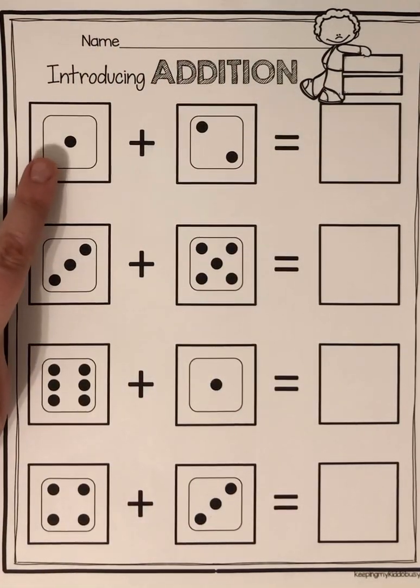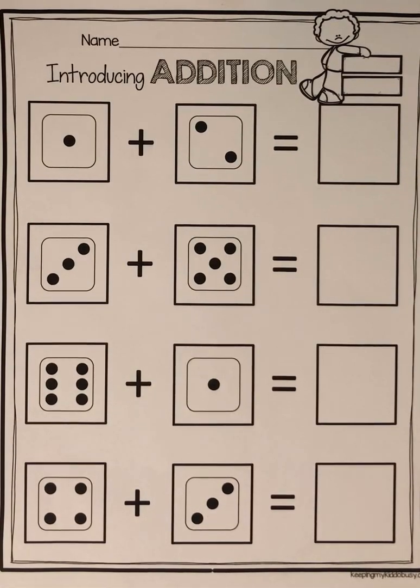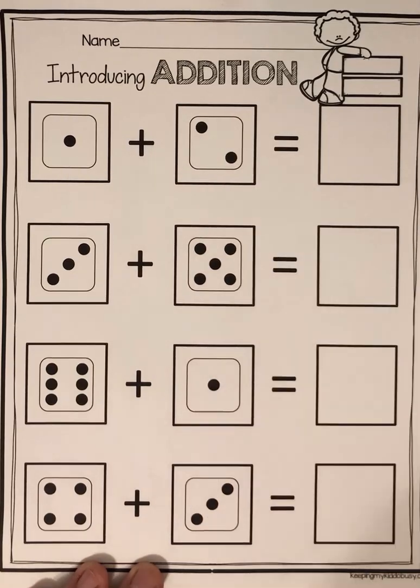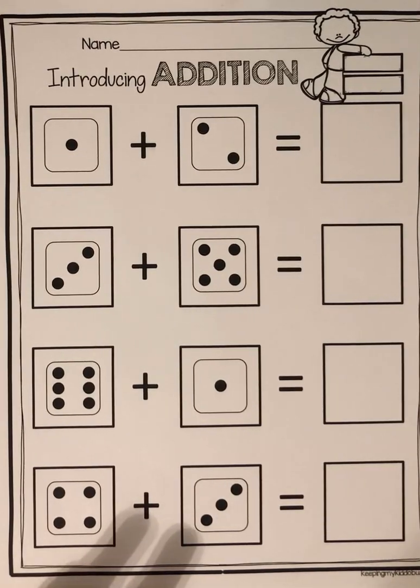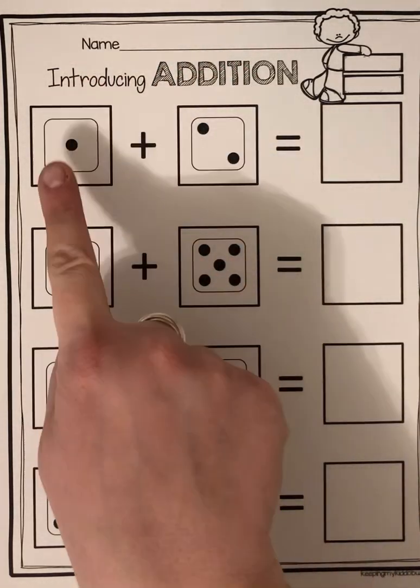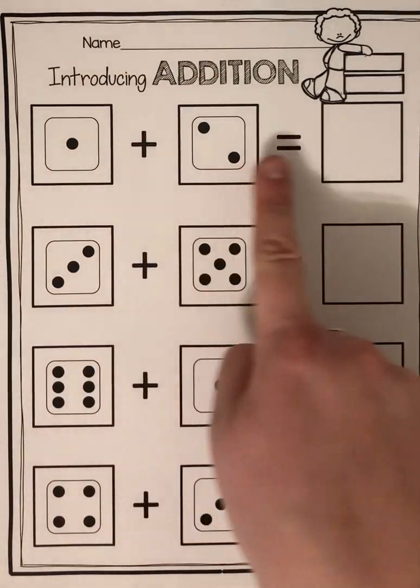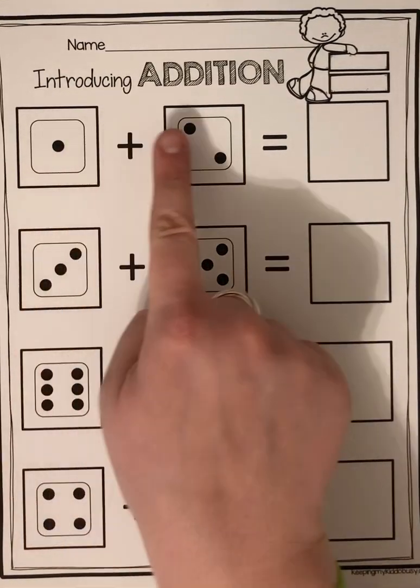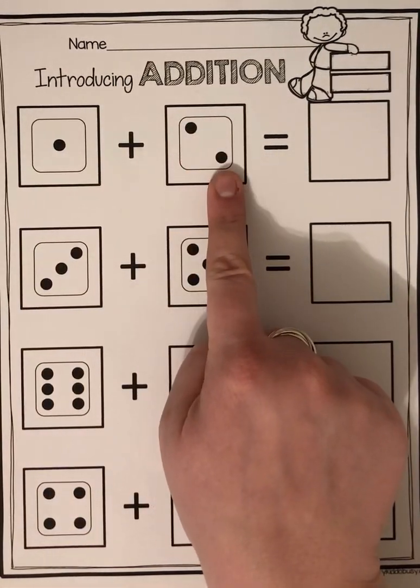So here, how many dots do I have on this one? I have one and how many dots are over here? Two! So I want to know how many dots I have on all of my dice just right here. One plus two equals. I have one, two, three.